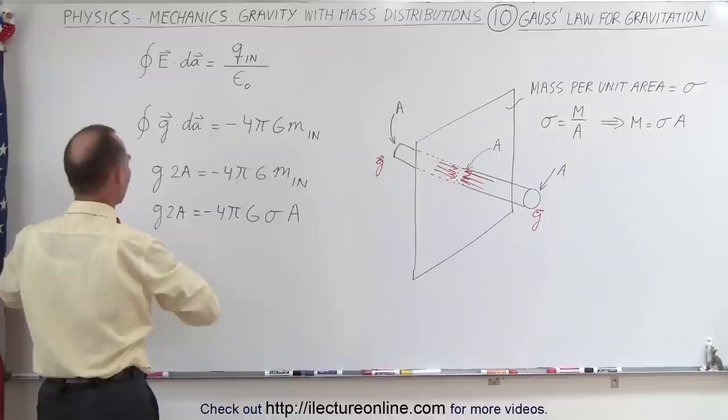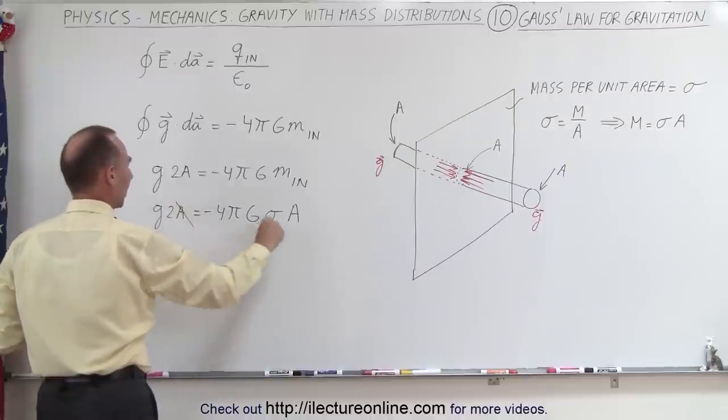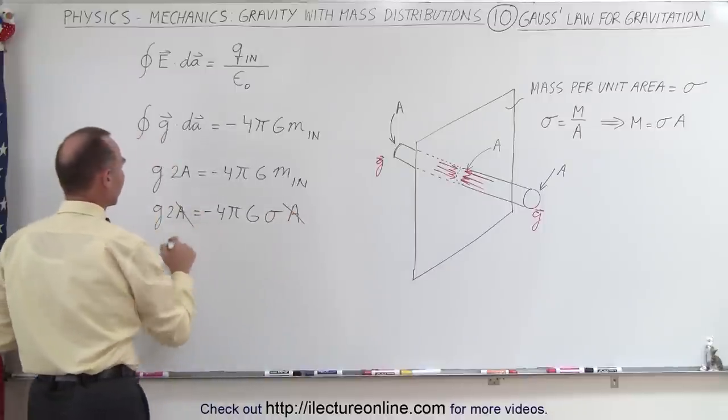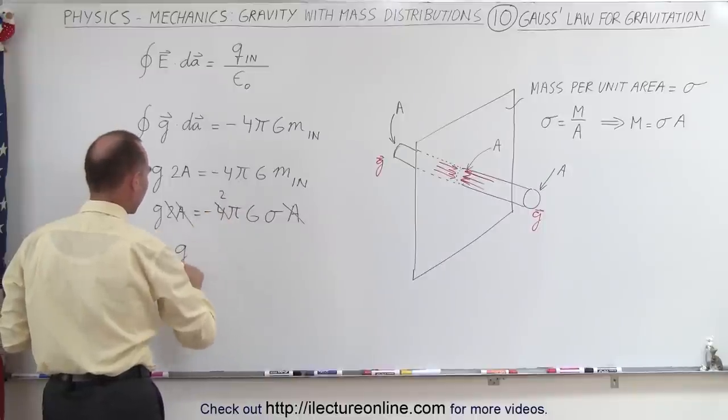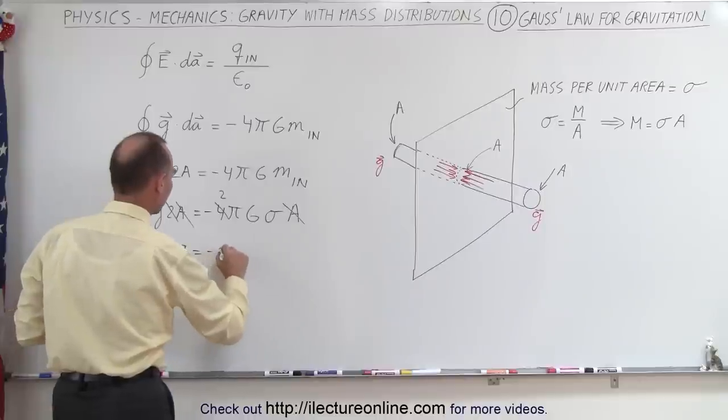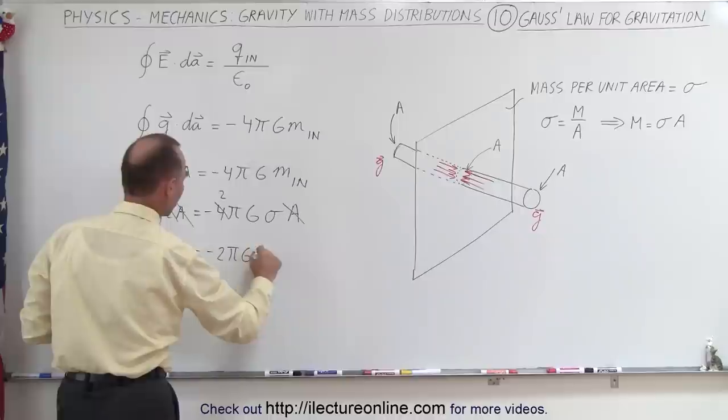We have an A now on both sides, so this A cancels out this A, and divide both sides by 2, so this goes to 1 and this goes to 2. So now we have the strength of the gravitational field, the magnitude of that field, is equal to minus 2πGσ, sigma being the mass density.